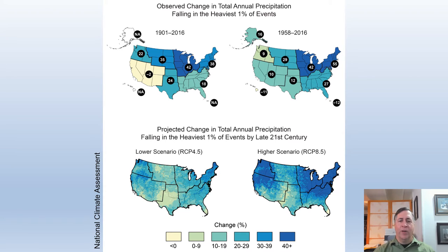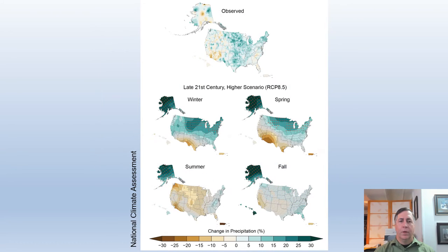Then we're seeing longer periods of drought in between those strong storms. Due to higher temperatures increasing evapotranspiration, droughts have reached record intensity in parts of the U.S. The western U.S., especially the southwest, is predicted to dry even further due to reductions in precipitation and increased evaporation. The southwest is already in a mega drought — the worst in 500 years — and the Pacific coast has also experienced severe droughts recently.